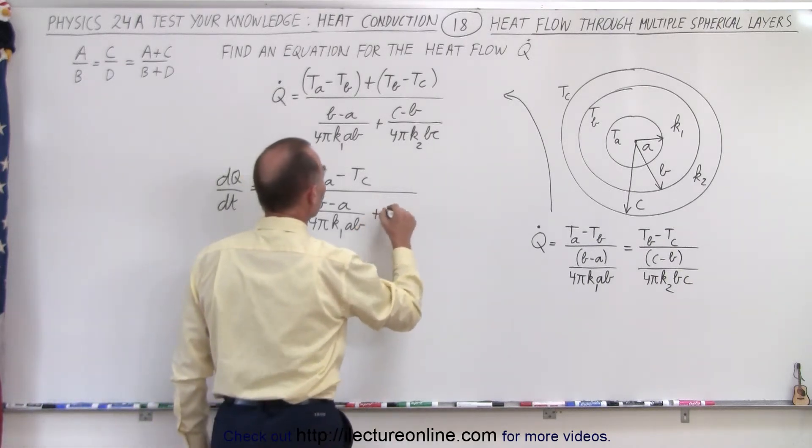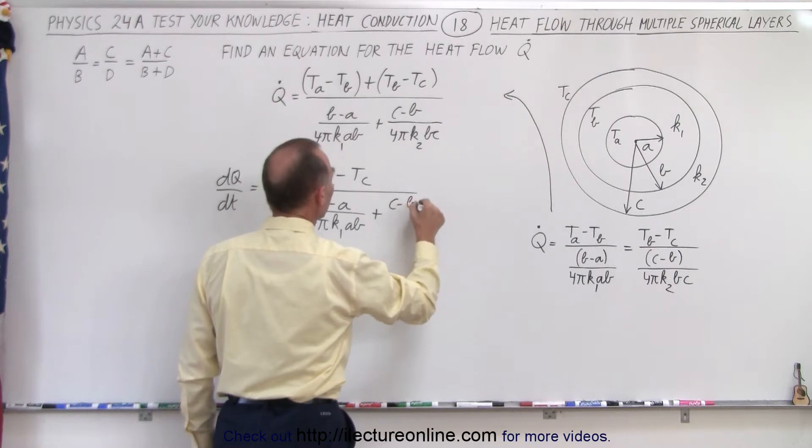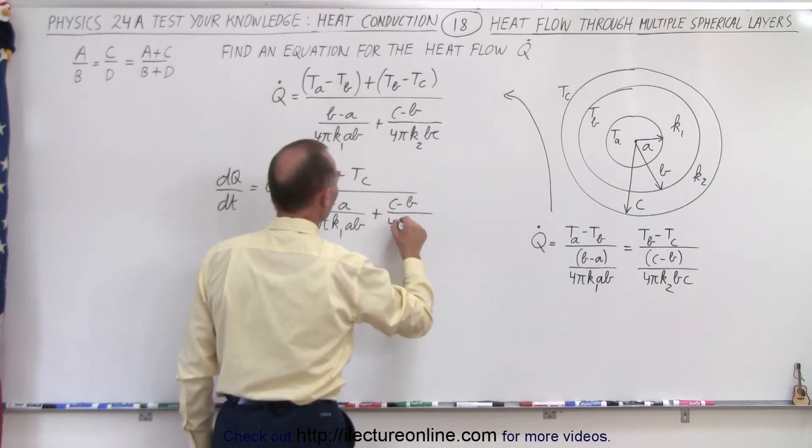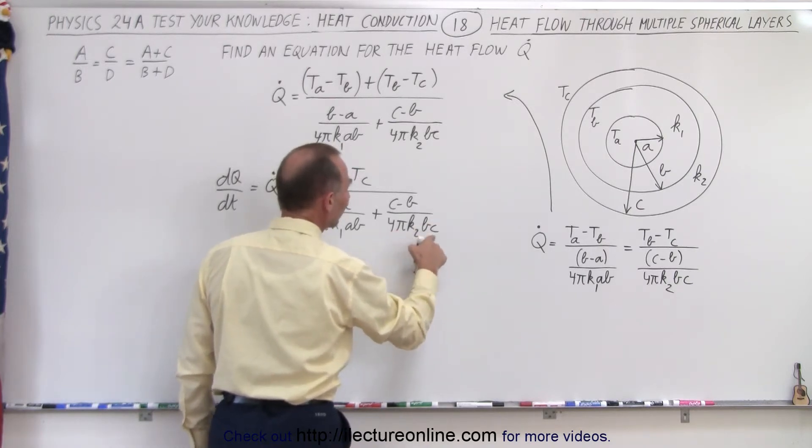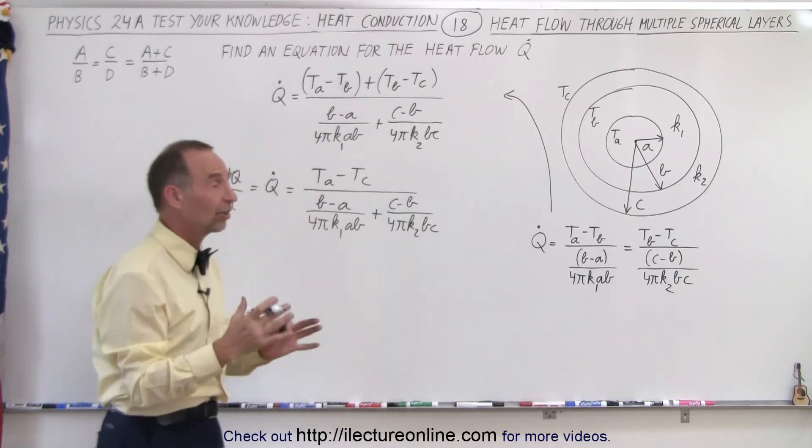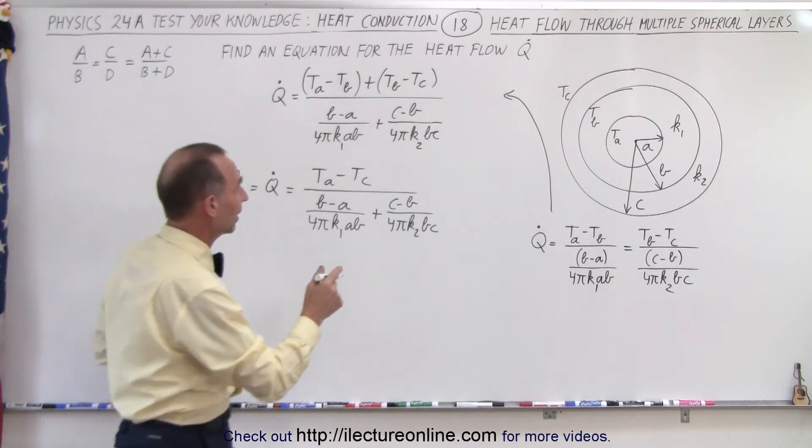And then we have plus, in this case, C minus B divided by 4πK2 times BC. And again, 4π times BC is essentially the cross-sectional area of the second layer.